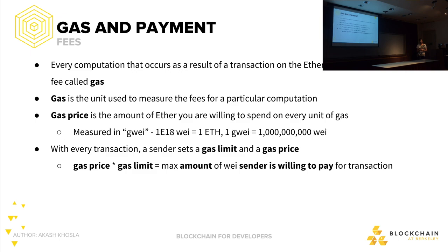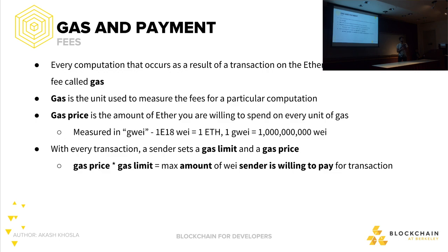Gas is used as a mechanism to stop things like infinite loops, and that's why it's necessary. The user is allowed to specify the gas limit — the total amount of gas they want to spend — in addition to the amount of ether they want to spend per gas. What dictates how much gas is going to be spent per transaction?